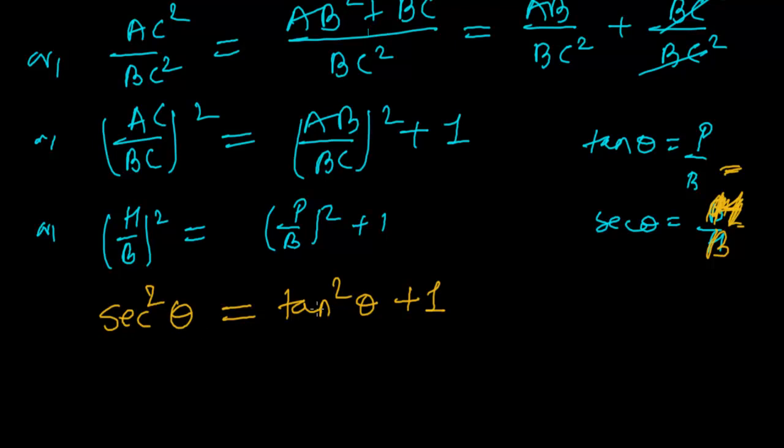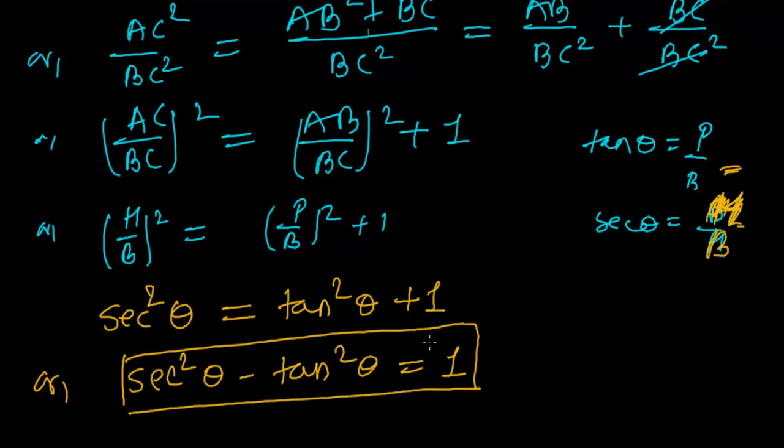So sec²θ equals tan²θ plus 1. Now let me arrange this: sec²θ - tan²θ = 1. This is our required trigonometric identity.